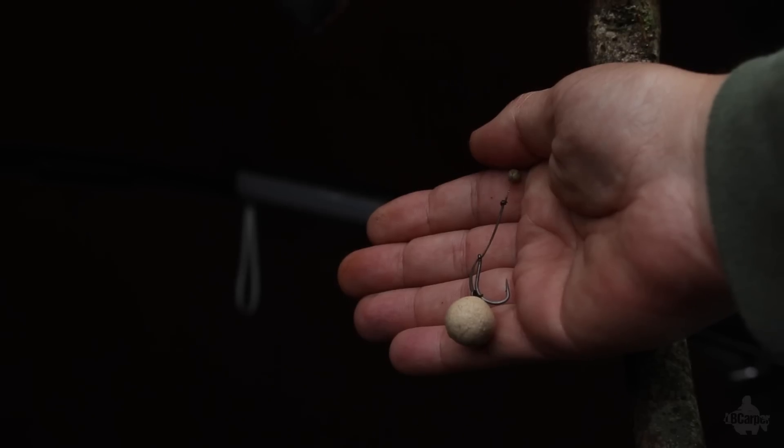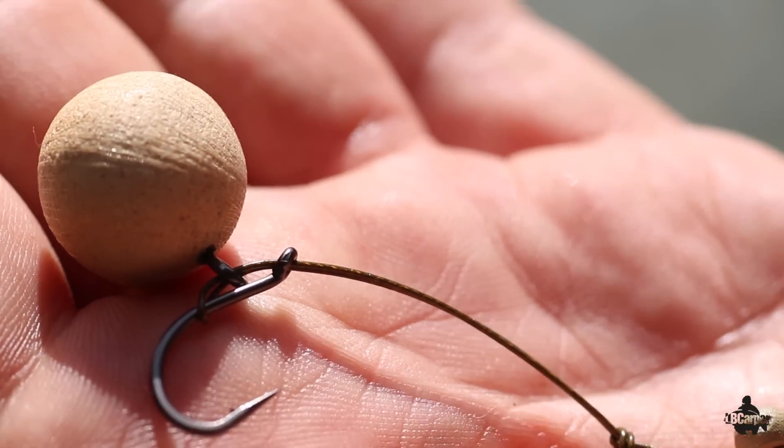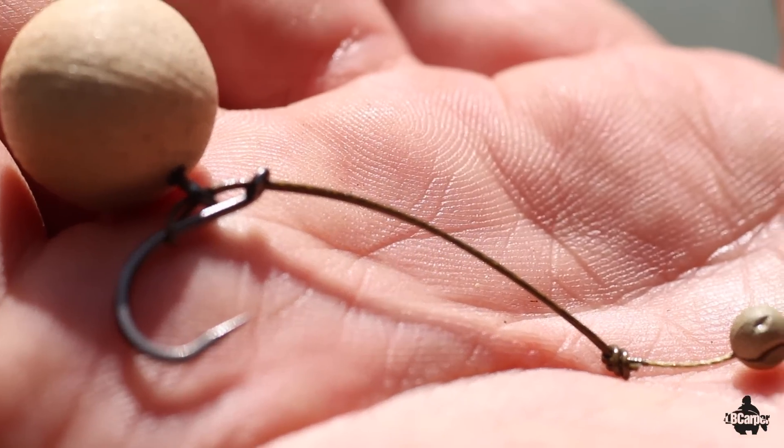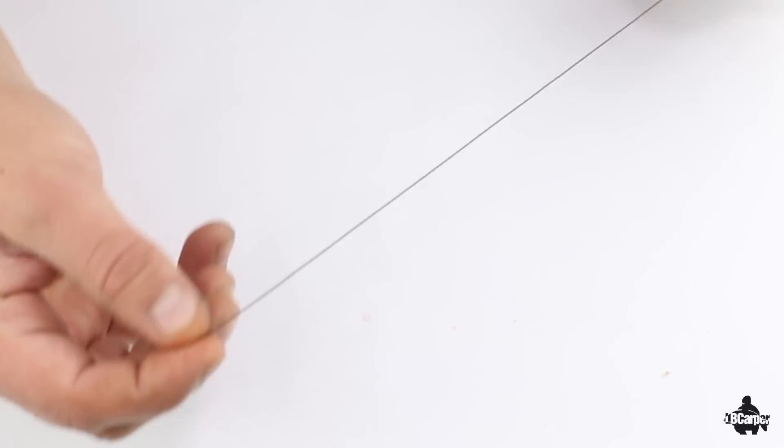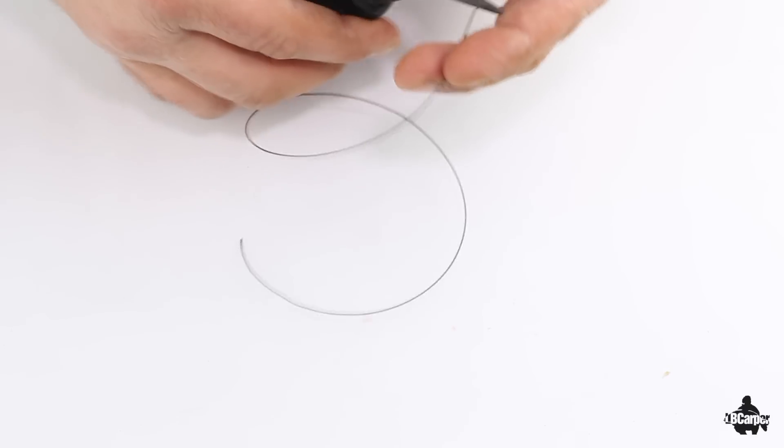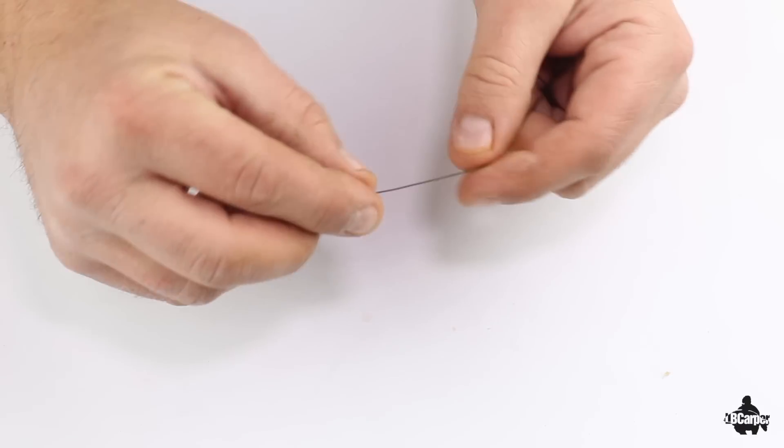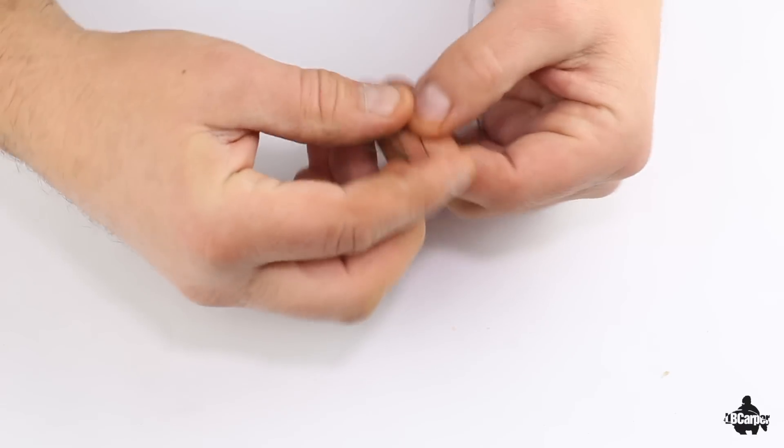This is the Johnny Mac rig or multi-rig as it's called. Really simple rig, very effective, has caught me many fish over the years. First stage is to cut off a length of coated braid. Next stage, tie a loop.